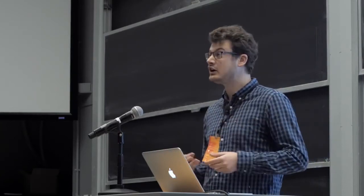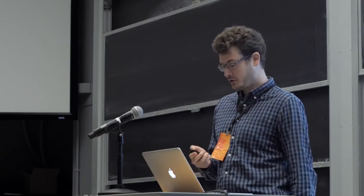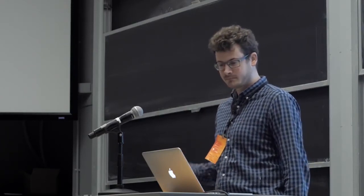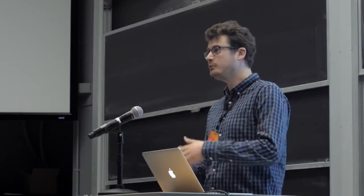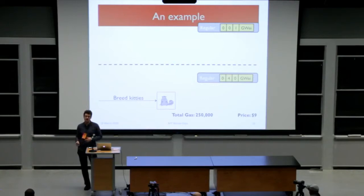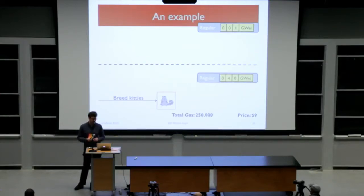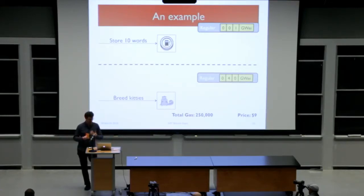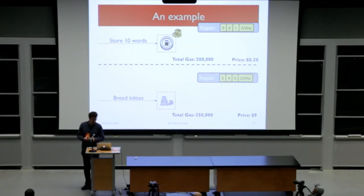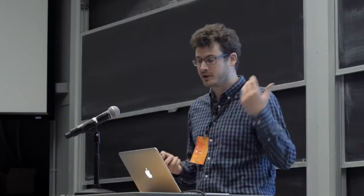Say it's the height of the CryptoKitty hype and gas prices are relatively high at 40 gigawei - that was standard at that time. You're interested in breeding a new CryptoKitty. This part of the smart contract is actually quite expensive - it costs about 250,000 gas to breed a new kitten. At these gas prices it's going to cost you about nine dollars just in transaction fees. Now say sometime before CryptoKitties came out, gas prices were quite low - one gigawei was very standard.